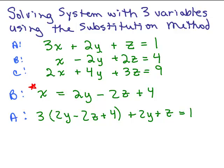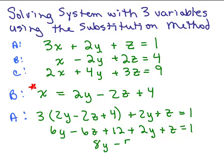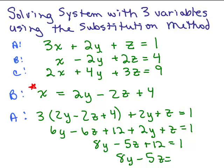Now we simplify using the distributive property, add like terms, and get variables on one side and constants on the other. So we get 6Y minus 6Z plus 12 plus 2Y plus Z equals 1, which simplifies to 8Y minus 5Z plus 12 equals 1. Subtracting 12 from both sides gives 8Y minus 5Z equals negative 11. I'll call this new equation D.